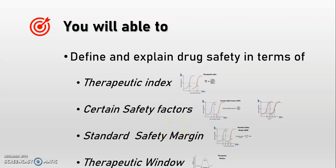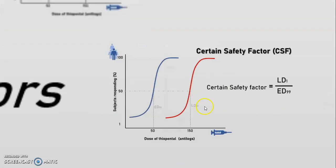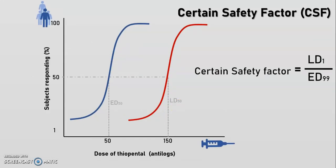The aim of any therapy is to achieve the desired therapeutic effect in all subjects without the risk of hazardous or lethal effects. From the therapeutic index, we can only provide an approximation of relative safety. Drug safety can be better calculated by finding the ratio between the dose effective in 99% of subjects (ED99) and the dose lethal to 1% of subjects (LD1). This ratio is called the certain safety factor, expressed as: certain safety factor = LD1 / ED99.